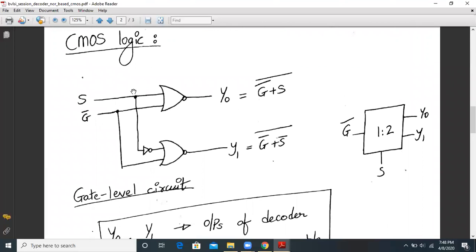As you can see, there are two NOR gates. So the output expression Y0 will be G-bar plus S the whole bar, and the output expression of the second NOR gate will be Y1 is equal to G-bar plus S-bar the whole bar. So you have S input and a NOR gate connected, and you have S-bar input for the second NOR gate.